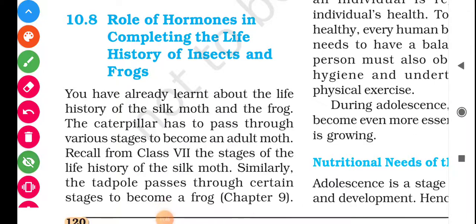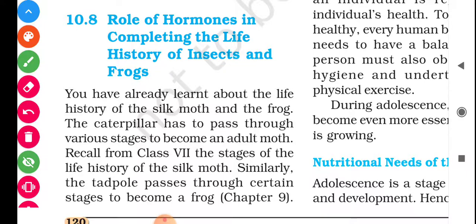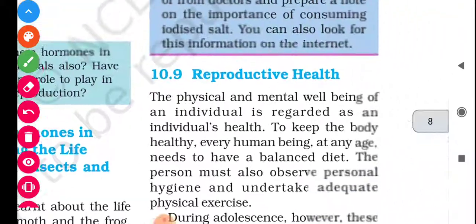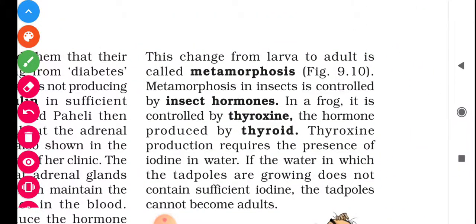Now let us talk about the role of hormones in completing the life history of insects and frogs. The caterpillar passes through various stages to become an adult moth — recall the life history of the silk moth from class 7. Similarly, the tadpole passes through certain stages to become a frog. This change from larva to adult is called metamorphosis. Metamorphosis in insects is controlled by insect hormones; in a frog, it is controlled by thyroxin, the hormone produced by the thyroid.